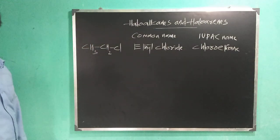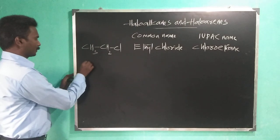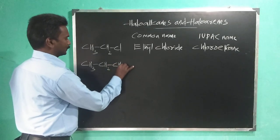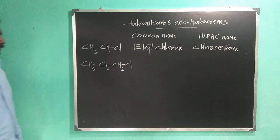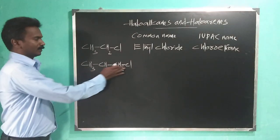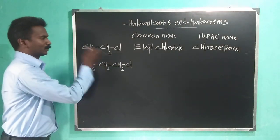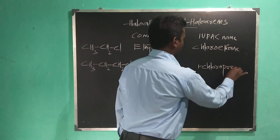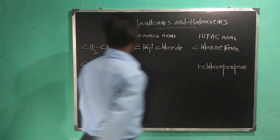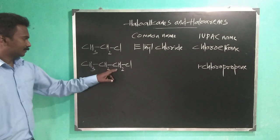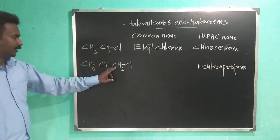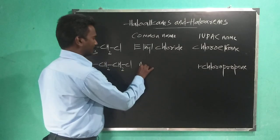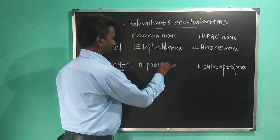Another compound having three carbon atoms: CH3-CH2-CH2-Cl. Its IUPAC name is 1-chloropropane. The common name, since it is a straight chain compound, is n-propyl chloride or normal propyl chloride.